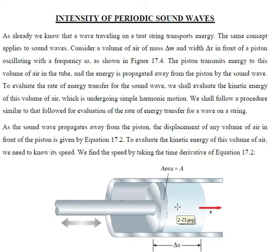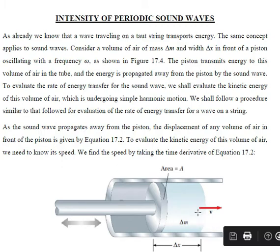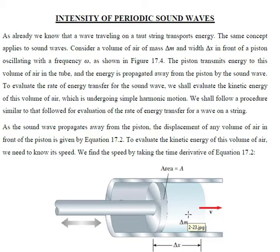Consider a small element of air having mass delta m. The cross-sectional area of the tube is A and the length of this element is delta x. So the volume of this element is A·delta x. We need to find the energy, so let us first evaluate the kinetic energy of this volume element. The kinetic energy of a particle of mass m is half m·v squared, where v is its speed.